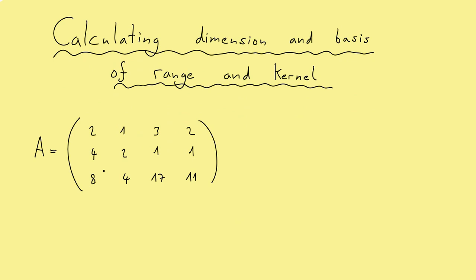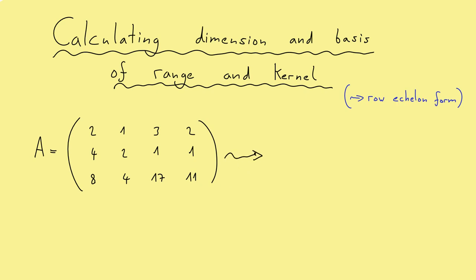So let's look at this 3x4 matrix. Because we have to calculate the range and the kernel, we want to do this simultaneously. Therefore we do what we do every time when we want to solve a system of linear equations — namely, we reduce this matrix to a row echelon form. And of course this is what I show you now.